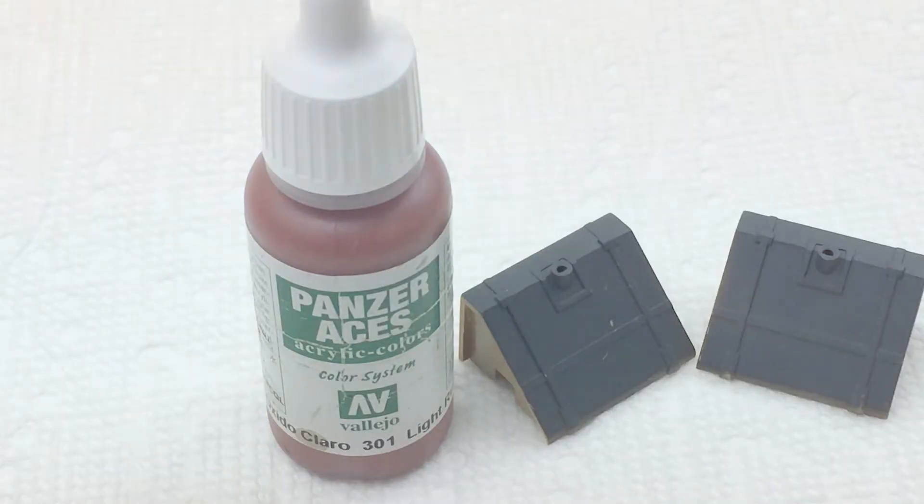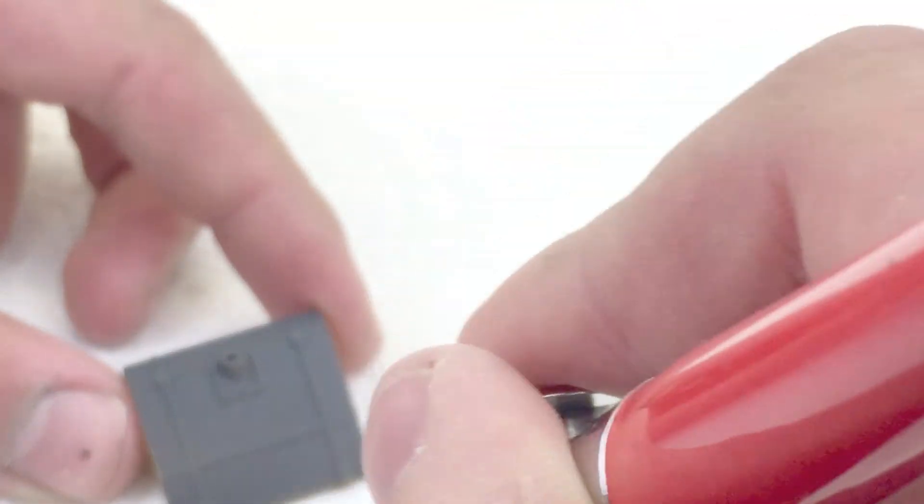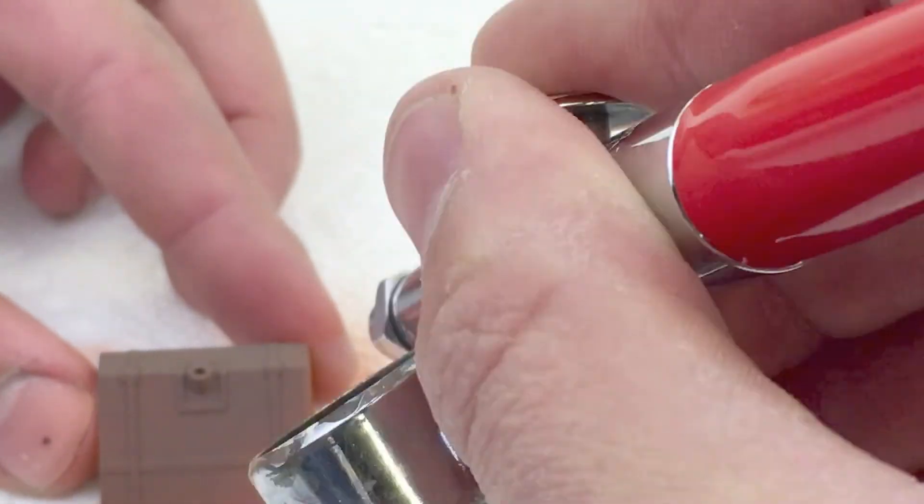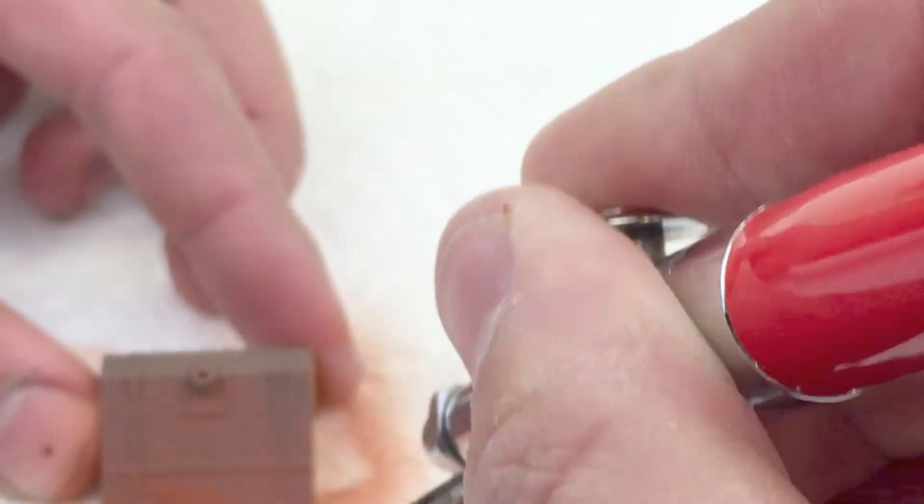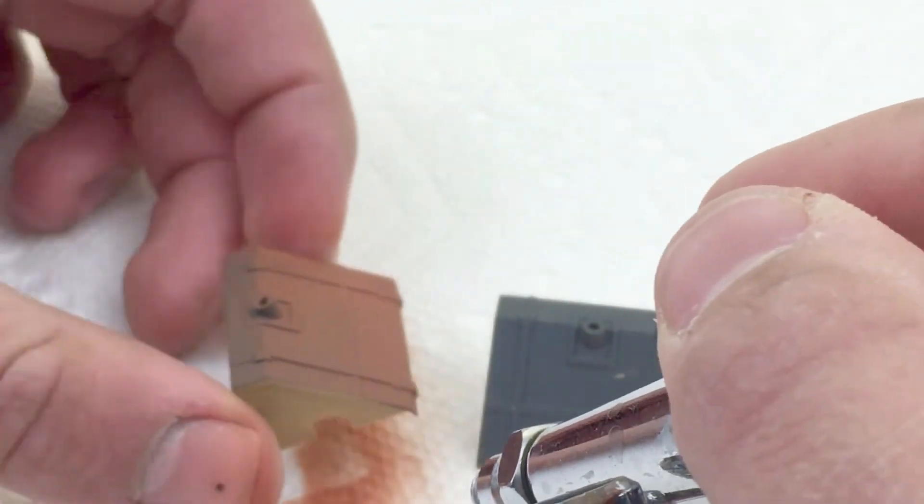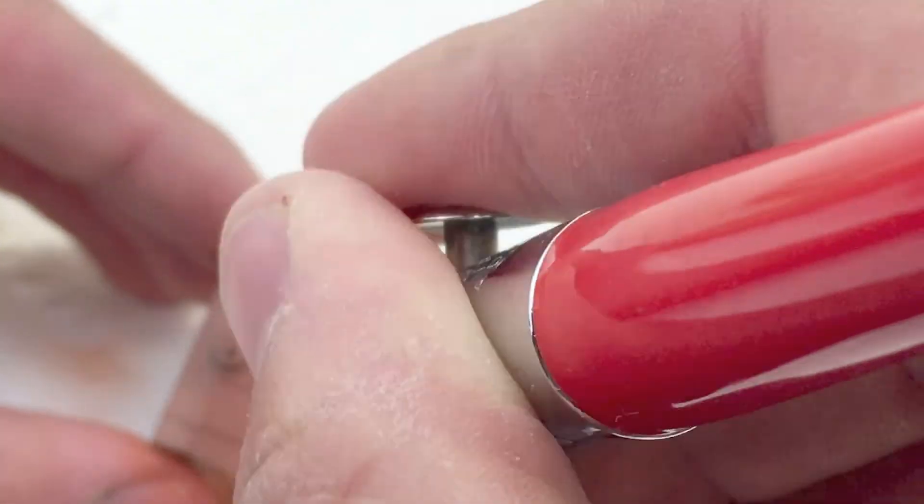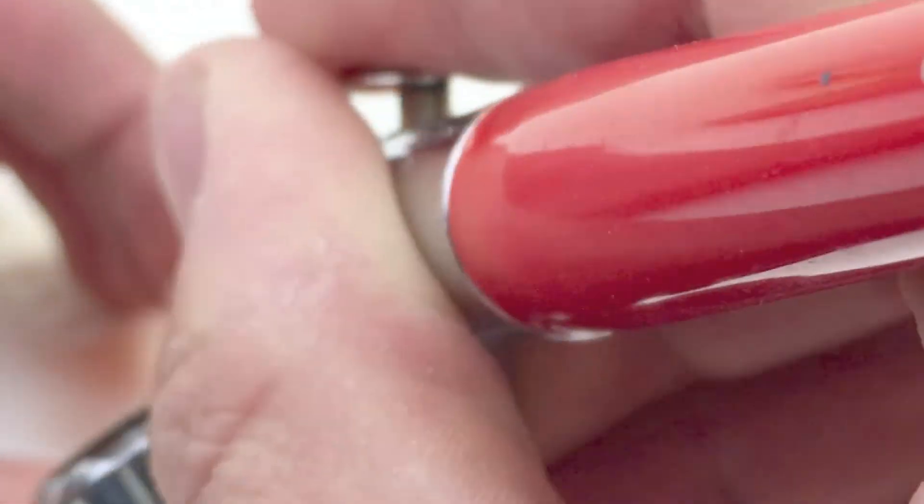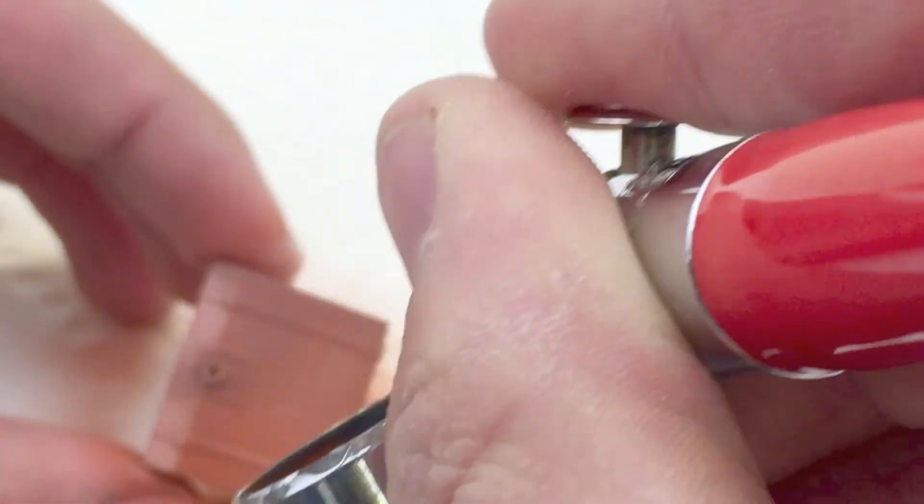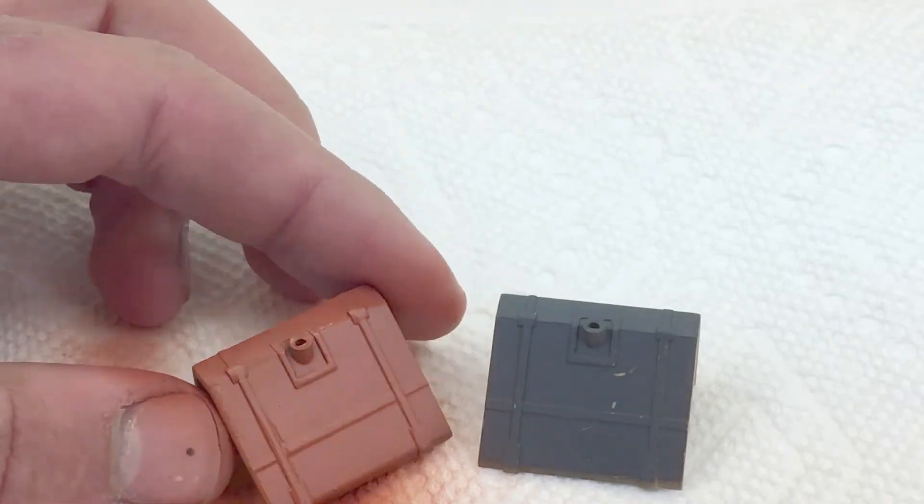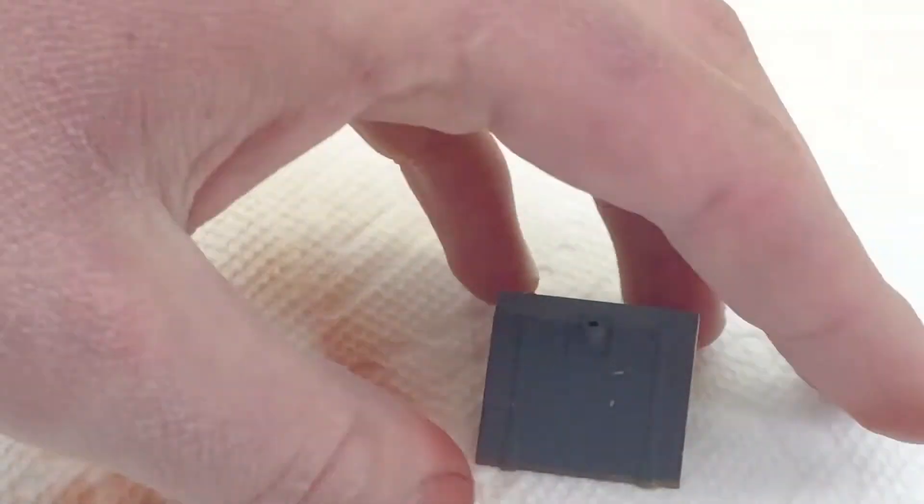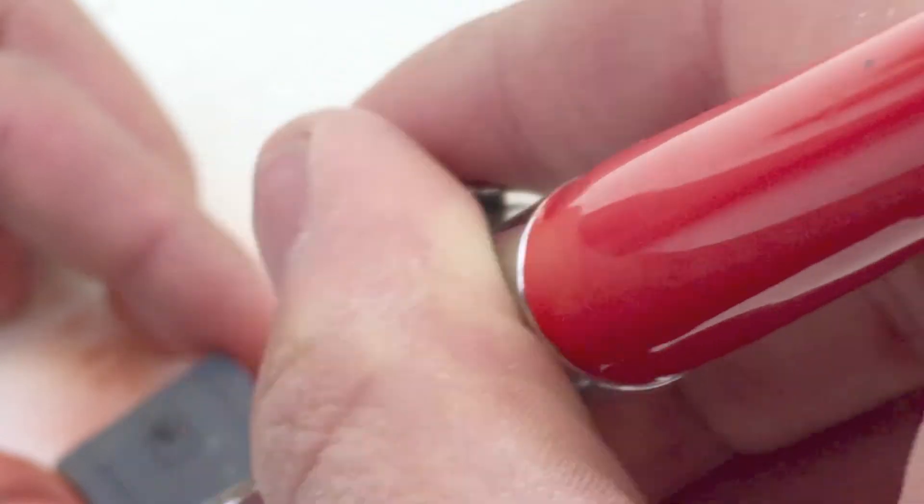I'm going to use Panzer Aces Light Rust for the fuel tanks. Now, red is notoriously hard to airbrush, so you have to build it up in light coats over and over again. Just kind of reworking it, going over it until you get the tone you like. I'm sorry that basically all you're seeing is the end of my airbrush, but to get them painted correctly, I had to put my airbrush there. Also, if you're wondering, I'm using a Paasche VL with a 1.05 mm tip.